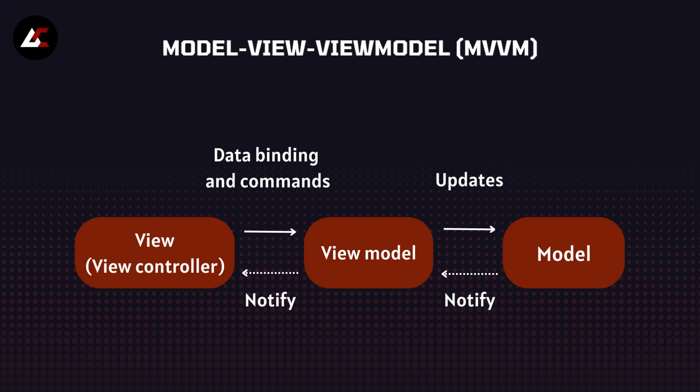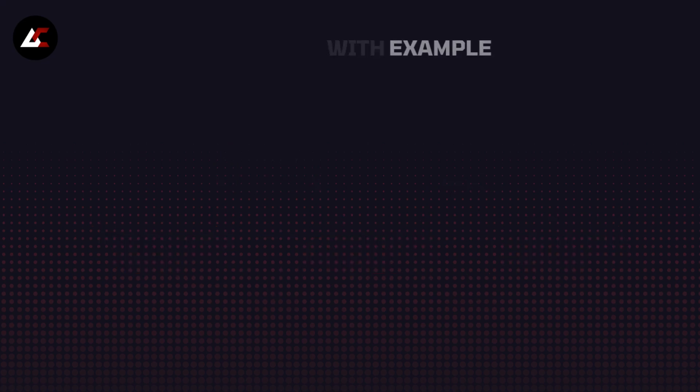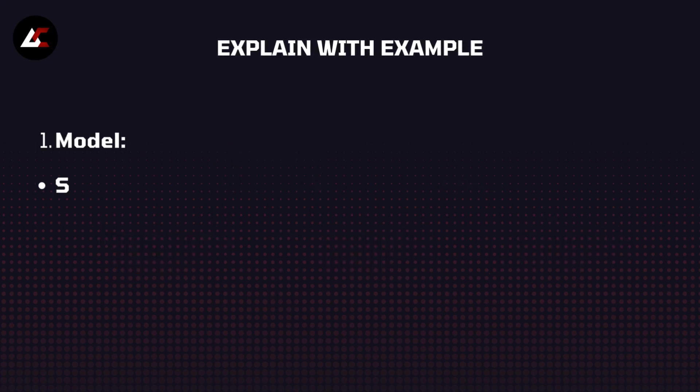For example, in a weather app, the Model would hold the weather data, the View would display it, and the ViewModel would format the data for display and handle user actions like refreshing the weather.